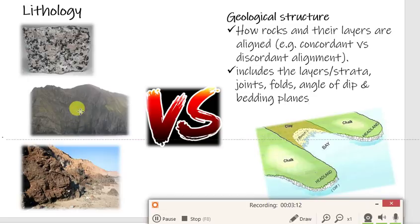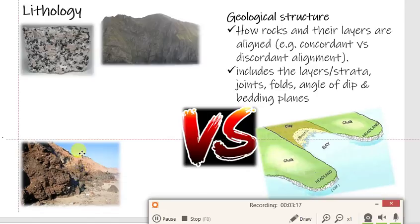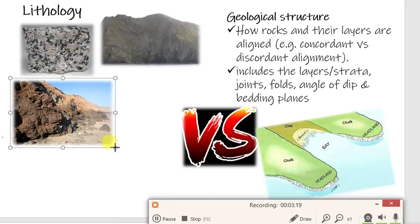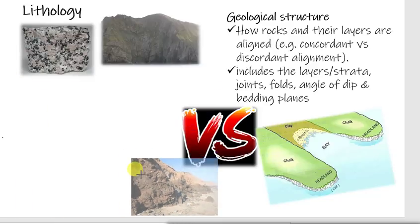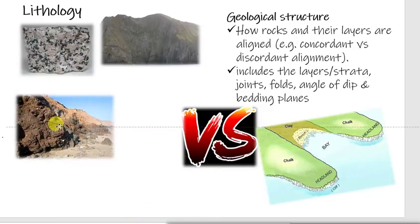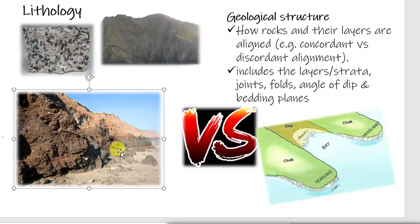It creates cliffs like our most famous example that we mention every lesson — Conic Air. This photograph, which I'm enlarging now, the lithology is unconsolidated and it is boulder clay. Its characteristic is it is very soft and easily eroded. So lithology is: what rock type is it? Tell me something about that rock type — is it hard or is it soft? Is it porous? Is it permeable?